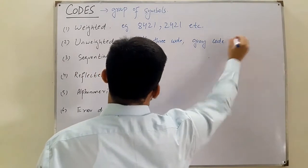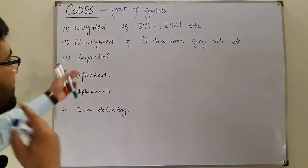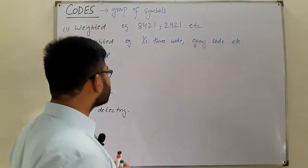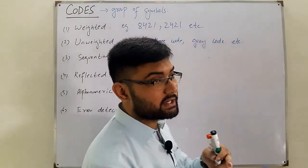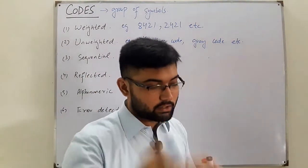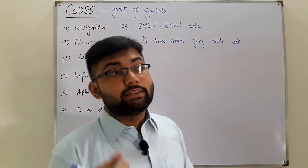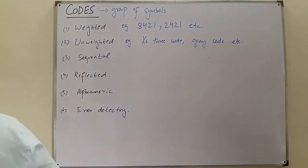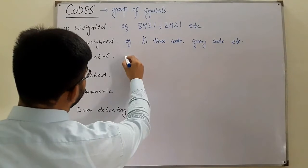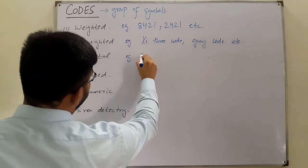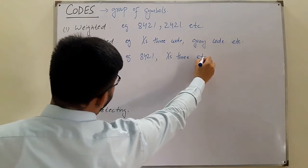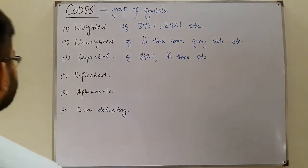Sequential code — from the name it's clear that it follows a particular sequence, where each next number, each next digit, is one greater than the preceding one. Examples that fall in this category are again the 8-4-2-1 code and the Excess-3 code.